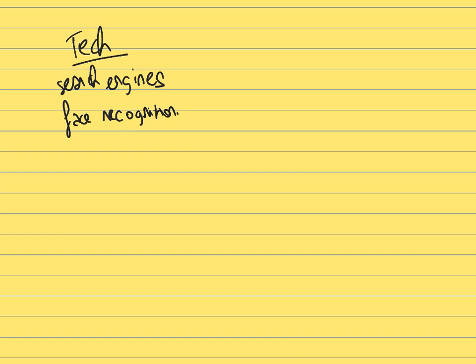Everything related to product recommendation is also a very important part of machine learning. For example, if you go to Amazon and buy one type of product, the website will recommend other related products. Similarly, Netflix will make recommendations of similar movies based on what you have watched and what other Netflix users have watched before. All of those recommendations heavily rely on machine learning.